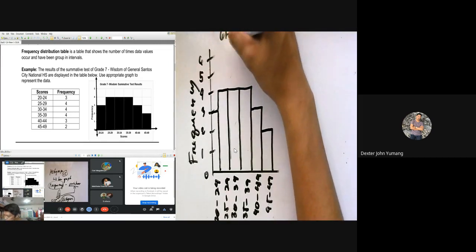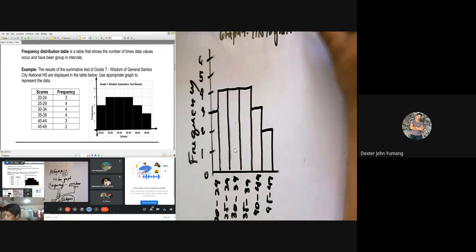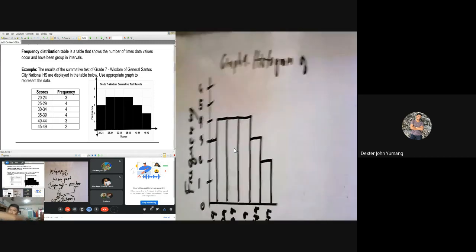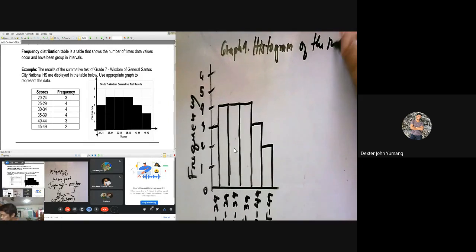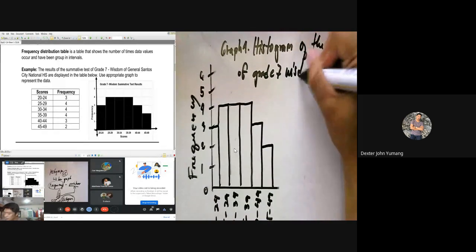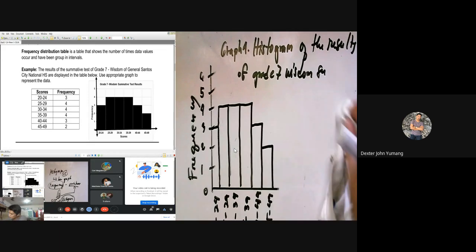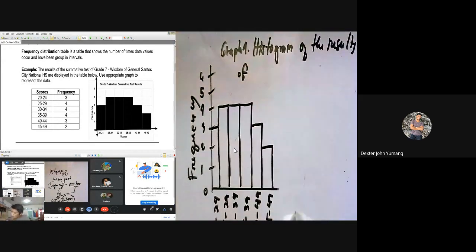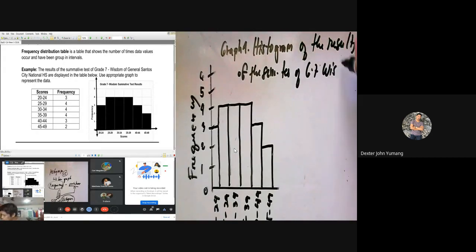What is the title for this? Since this is a graph, graph number four na tayo, histogram. Histogram of, balikan nyo yung example, the results of histogram of the results of grade seven Wisdom, summative test, or the results of the summative test, grade seven Wisdom.